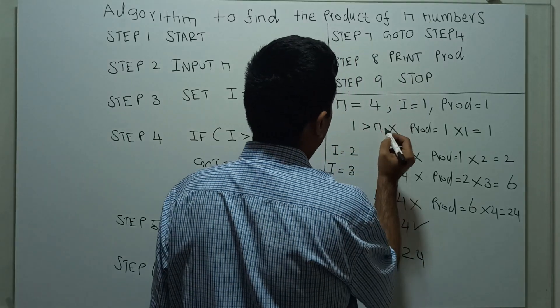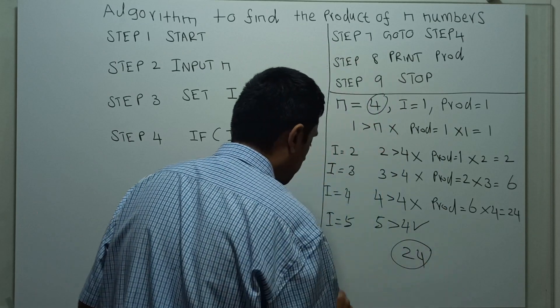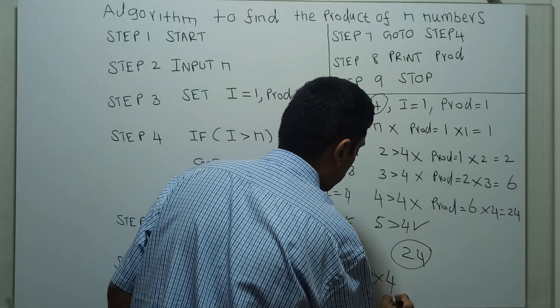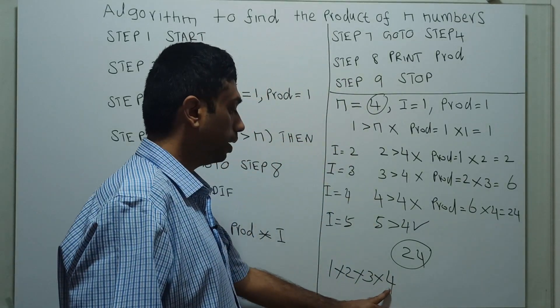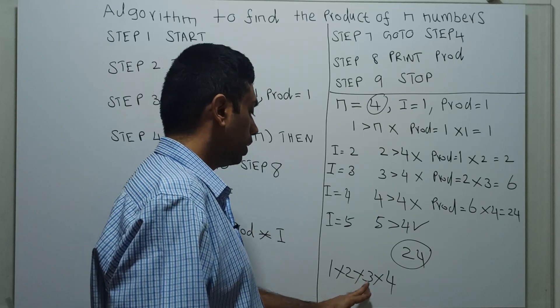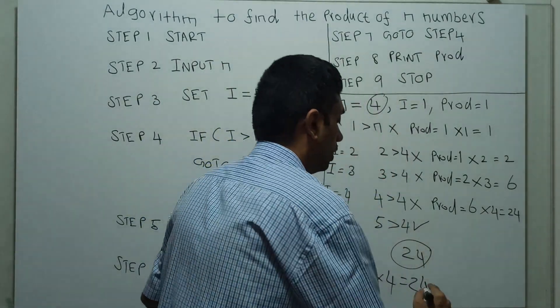What was my input? My input was 4, and the result is 24. How did we get this? 1 times 2 times 3 times 4. I gave a range from 1 to 4, and the product was calculated: 1 times 2 is 2, 2 times 3 is 6, 6 times 4 equals 24. So our algorithm is working correctly.